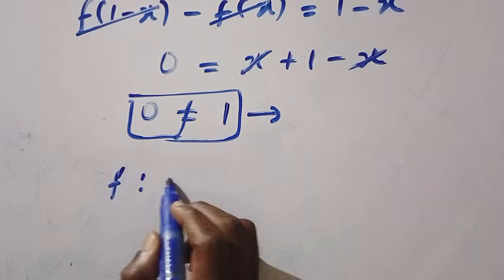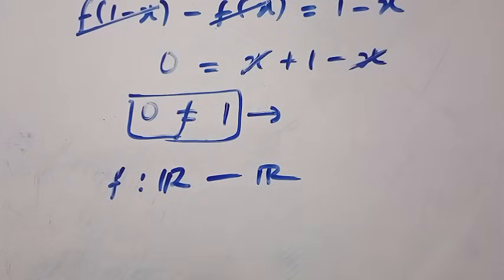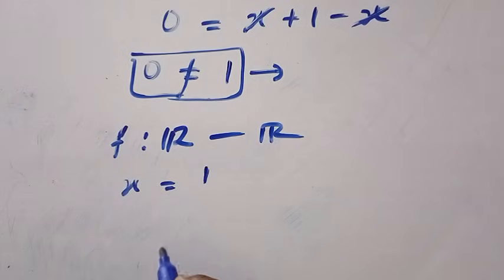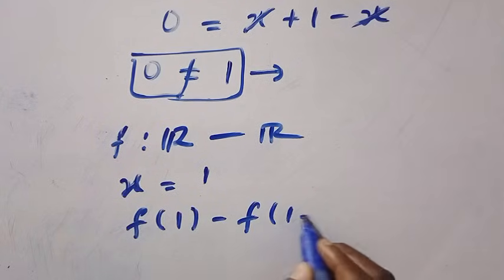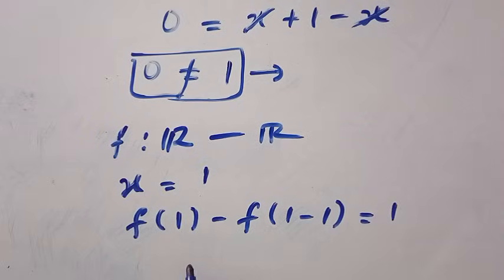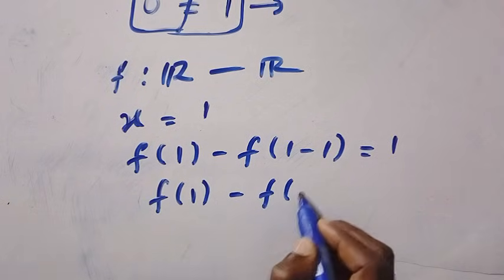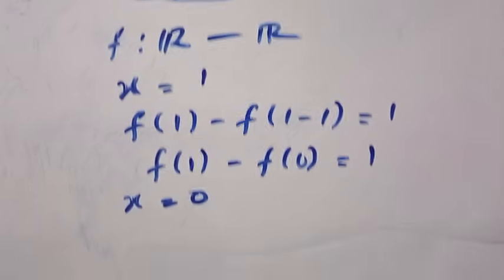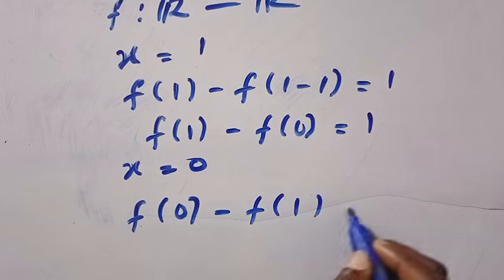If f is from R to R — that is, every real number — let's test for some real values. Assuming I set x equals 1, we are going to have f of 1 minus f of 1 minus 1, equals 1. So we have f of 1 minus f of 0, this equals 1. And let's test for x equals 0. Setting x equals 0, we are going to have f of 0 minus f of 1, this equals 0.